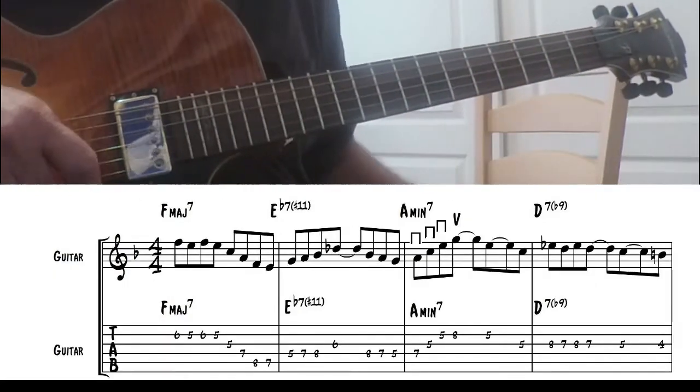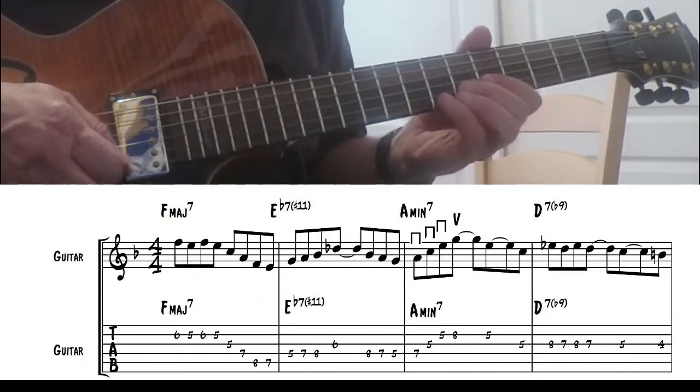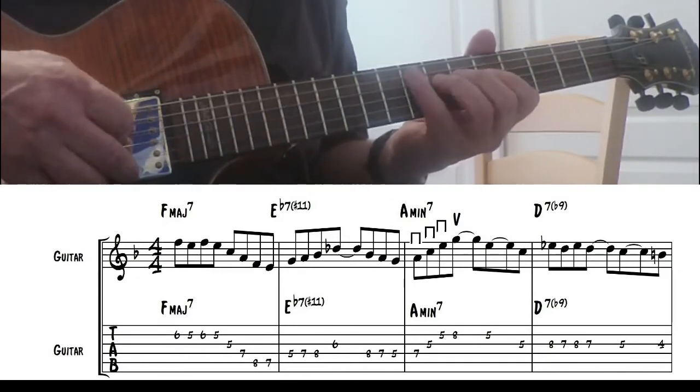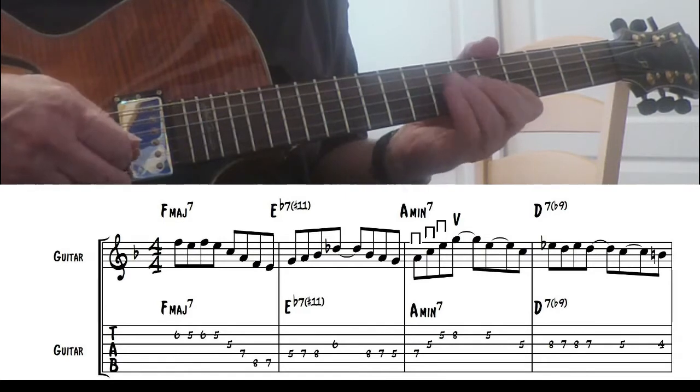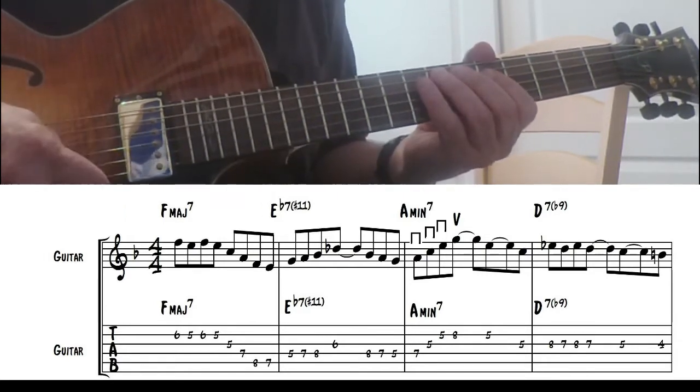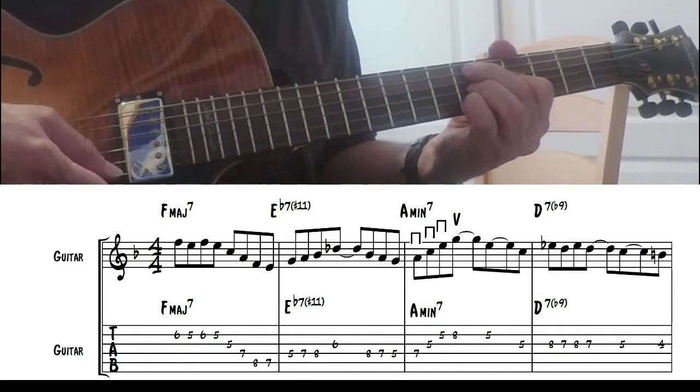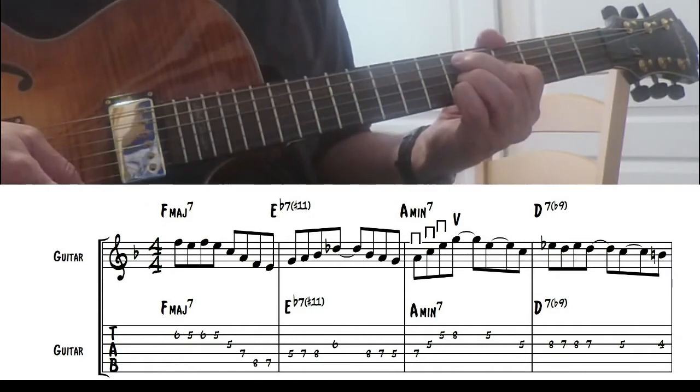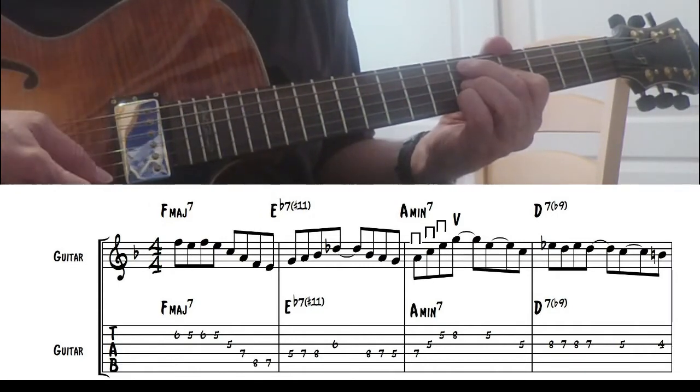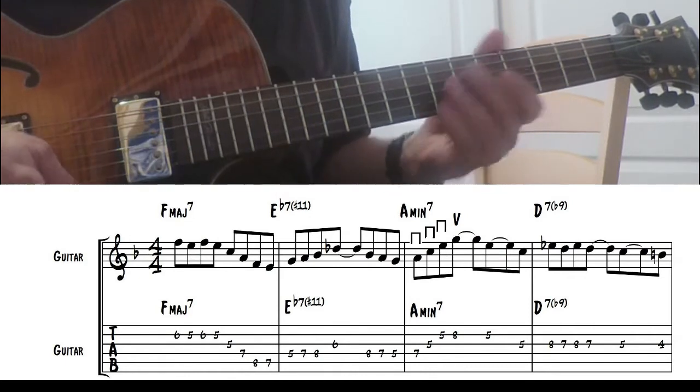Okay, the first measure is just based on an F major 7 arpeggio, 1-7, 1-7, 5-3, 1-7, then we're going to use the Lydian dominant on the flat 7, the backdoor dominant sometimes it's called.